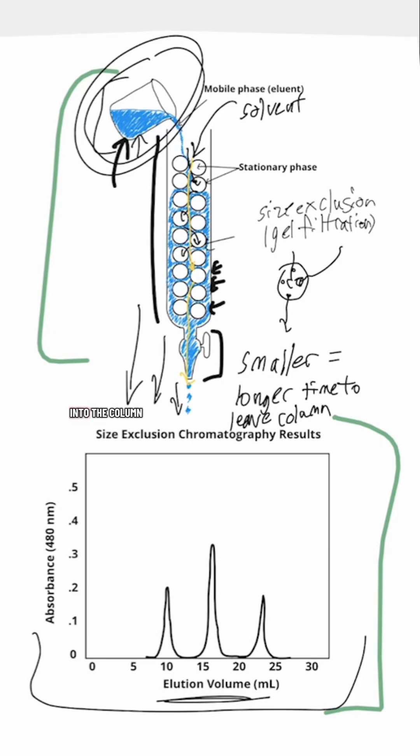As we're pouring more into the column and collecting more volume that's leaving the column, we are going to be measuring the absorbance values of what we collect. And the absorbance value will show us when a molecule has exited.